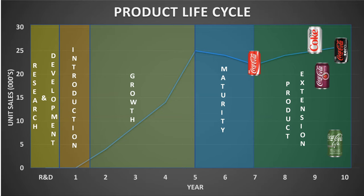Another extension strategy would be brand extension. An example of this would be Coca-Cola using their brand to expand into a new market — for example, selling a range of chewing gum — essentially using the Coca-Cola brand to help the product become established in a new market much quicker.